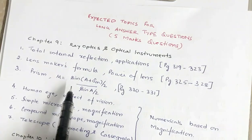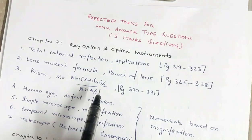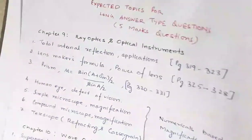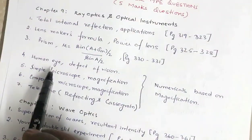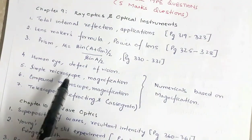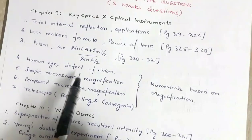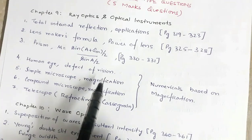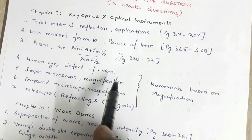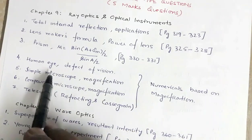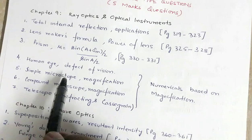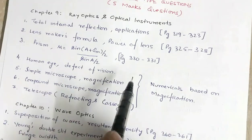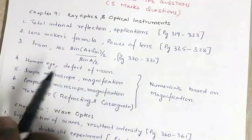Then you have the human eye: various components of the human eye, the function of those components, defects of vision — any one of the defects — and how to rectify that defect. If a question is asked from the human eye or defects of vision, it will definitely be for three marks, and then there will be a two mark numerical question.